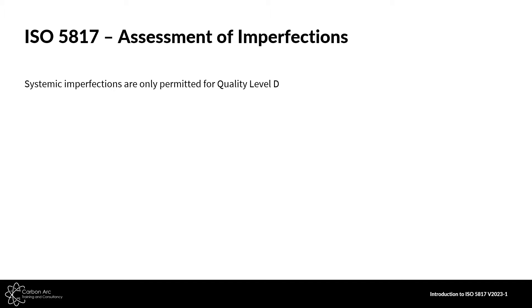When assessing imperfections, some key points to pull out: we've got something called systematic imperfections, which are only permitted within quality level D. Anything constantly appearing through the weld at levels C and B is not allowed.